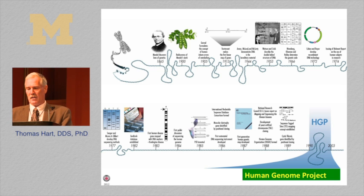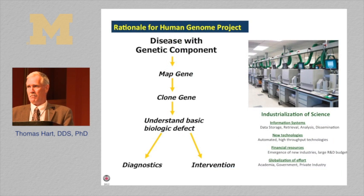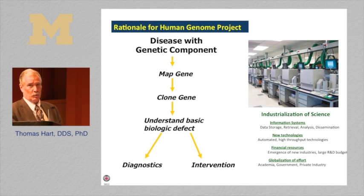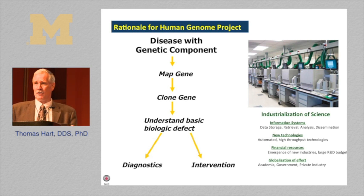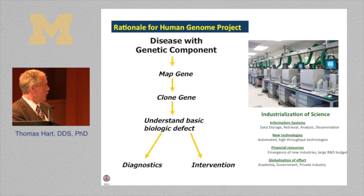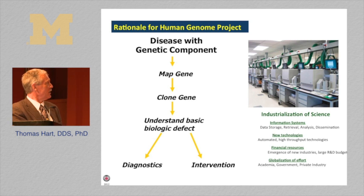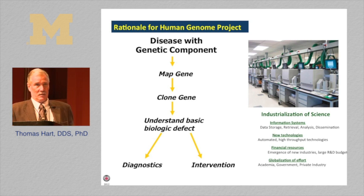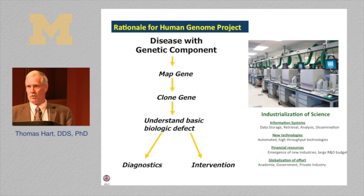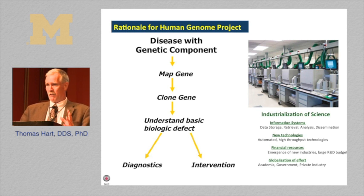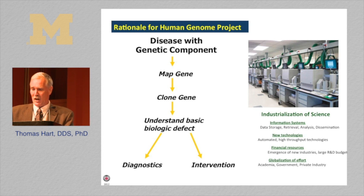The development of new information systems and technologies continues to advance at a tremendous rate. When the Human Genome Project was begun, the technologies to complete it didn't even exist, but they were successfully developed. Outside of wartime efforts, you really didn't have global industries with large R&D budgets, academics in different institutions and countries, governments, and private industry all participating toward a common goal. This was the first big science biology project.